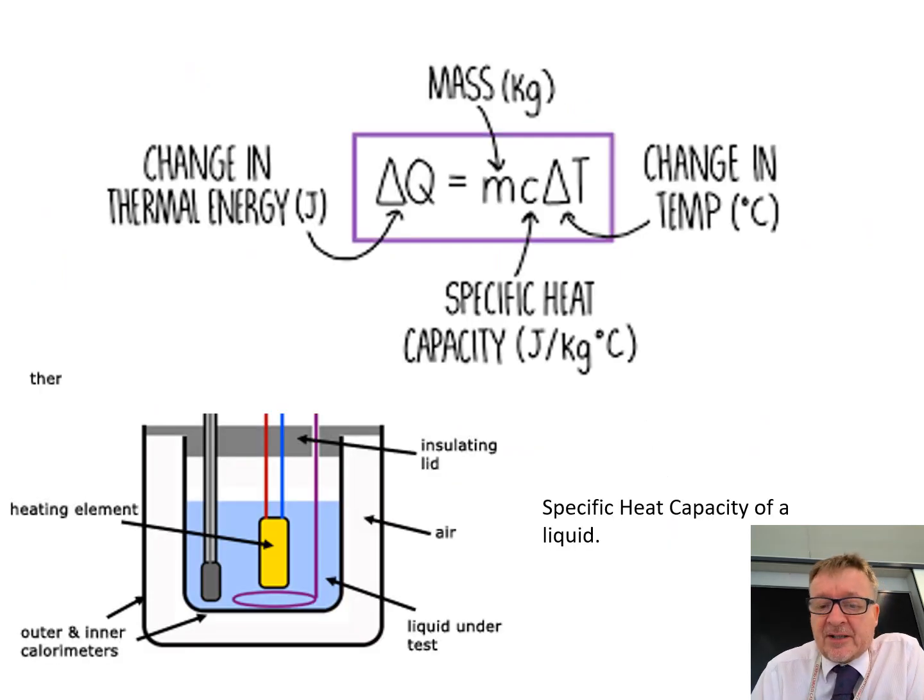Now, you might also get asked about specific heat capacity of a liquid. You do exactly the same thing. There is no difference at all. The only difference is that instead of having a mass of a certain metal, what you've got is you've got the mass of a certain liquid instead. So, you do exactly the same practical itself.